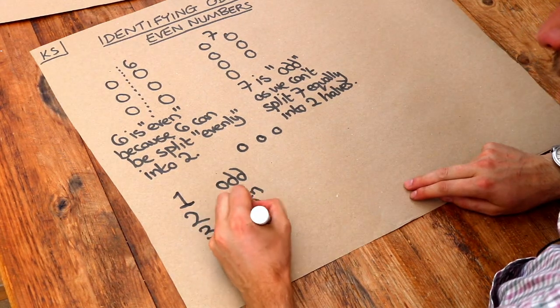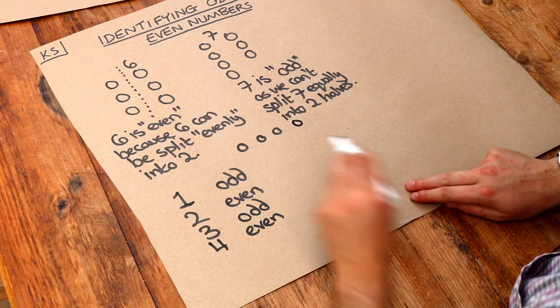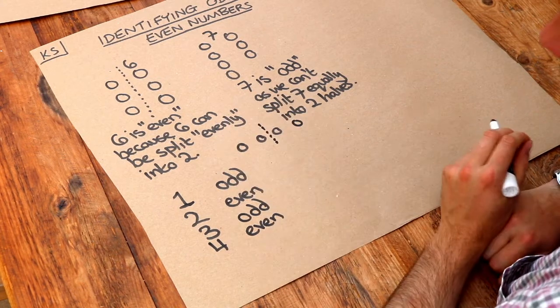Four is even. Because if we had a fourth person, then yes, I can split that into two equal halves.